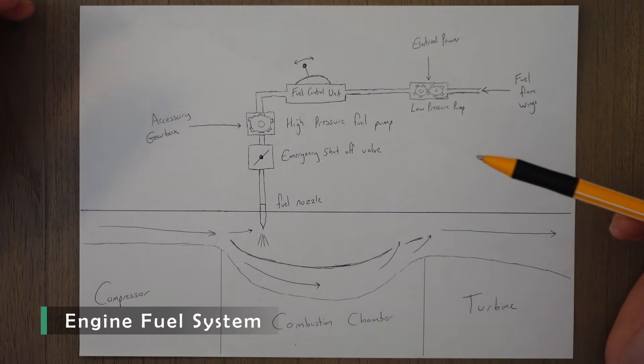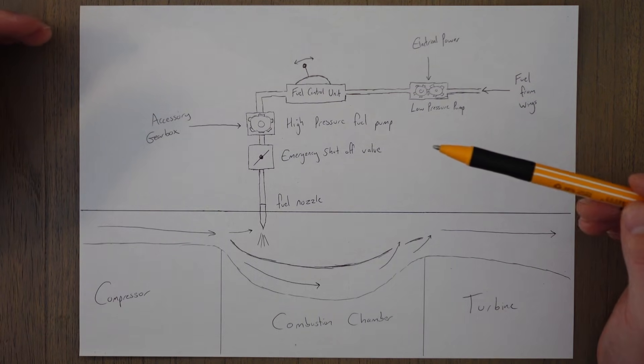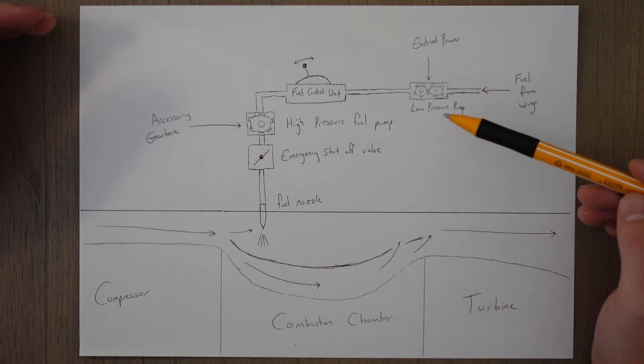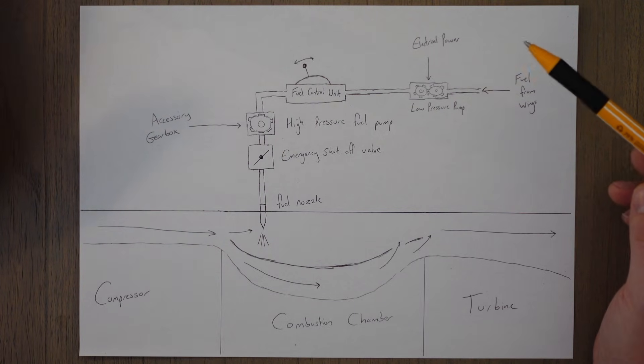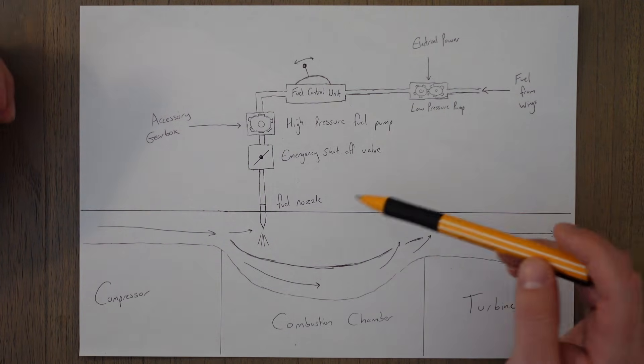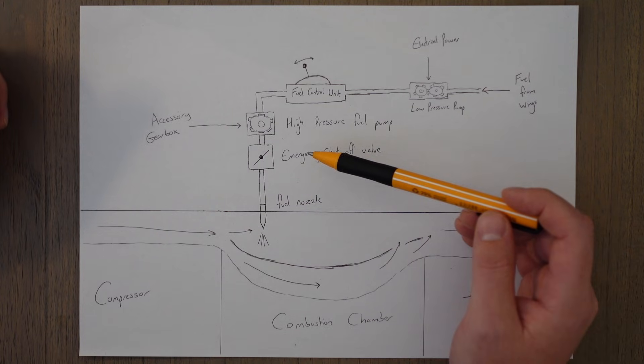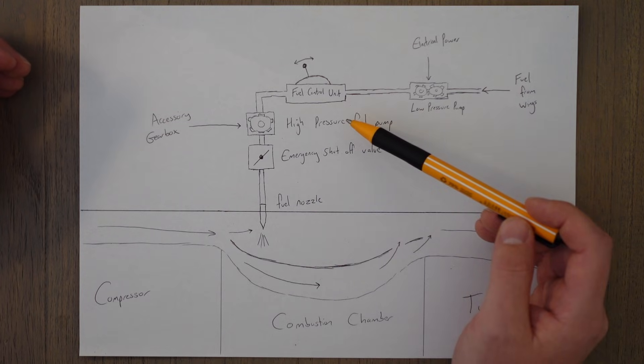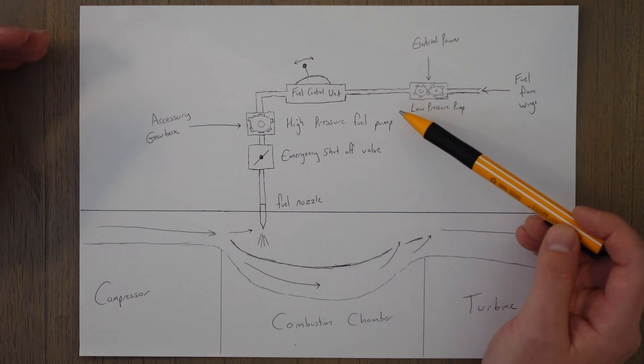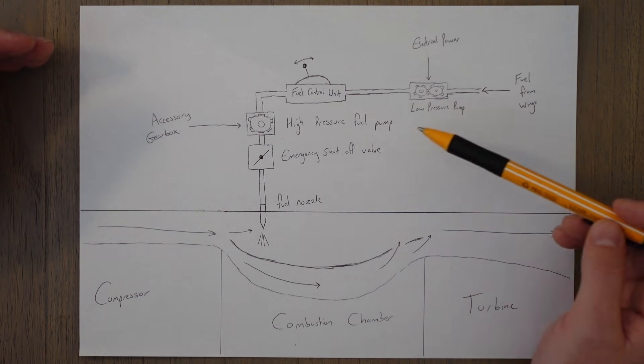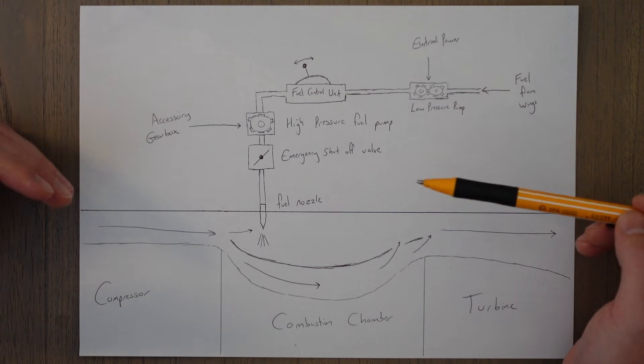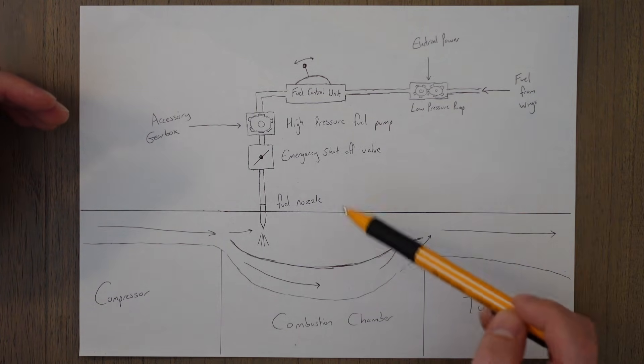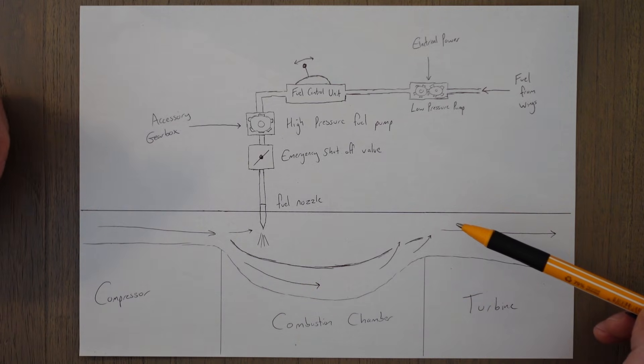The engine fuel system delivers the correct amount of fuel at the correct pressure under all flight conditions, and the fuel system is normally fully automatic. The components involved in the engine fuel system are an engine driven high pressure fuel pump, an emergency shutoff valve, a fuel control unit, and a smaller low pressure pump to suck fuel from the wing tanks, which is normally electrically powered, and then of course the fuel nozzles that actually spray the fuel into the combustion chamber.